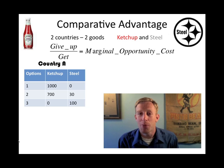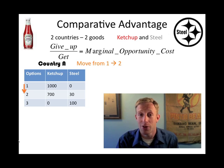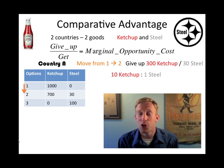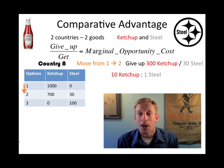If we move from option 1 to option 2, we're giving up 300 gallons of ketchup — that's 1,000 minus 700 — and dividing it by what we get in return, which is 30 units of steel. 300 divided by 30 gives us a ratio of 10 ketchups to 1 steel. Incidentally, if you go from option 2 to option 3, you'll get the same ratio. In this case, the marginal opportunity cost of producing one unit of steel is 10 gallons of ketchup.